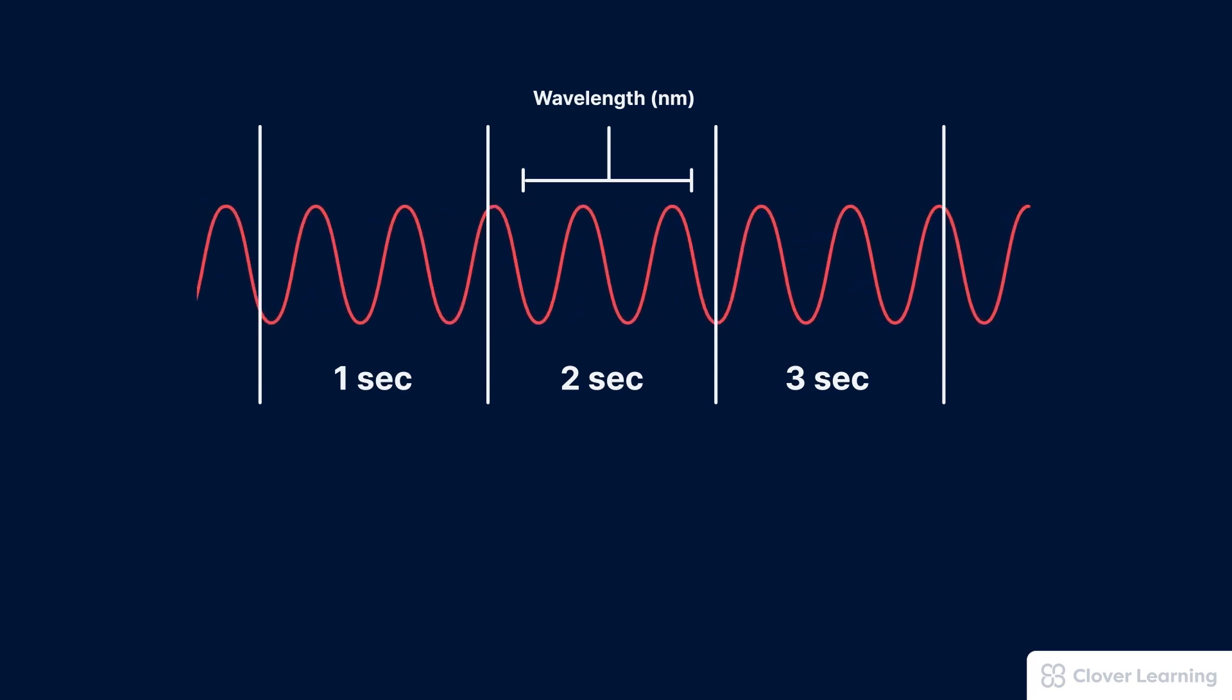When the peaks are closer together, the wavelength decreases and the x-ray photon has more energy. But when the wavelength decreases, something else also happens. The frequency increases.